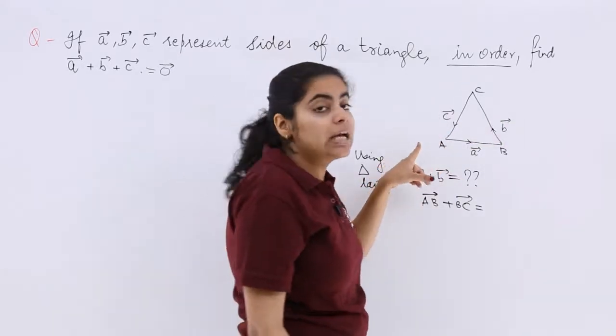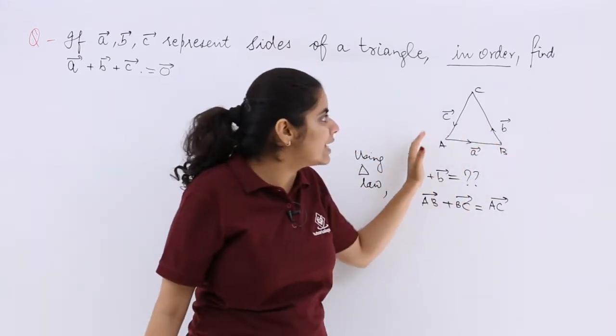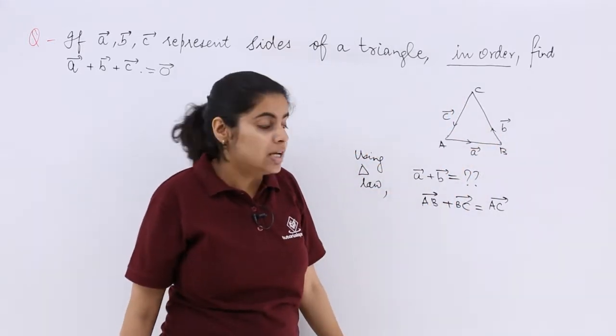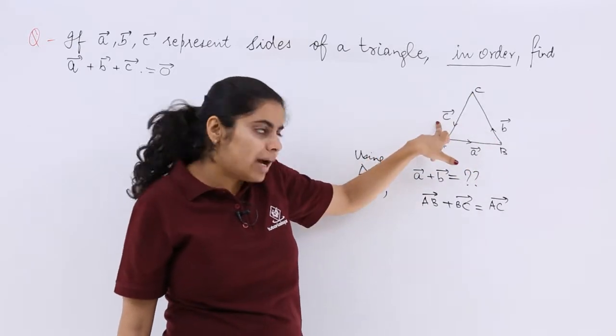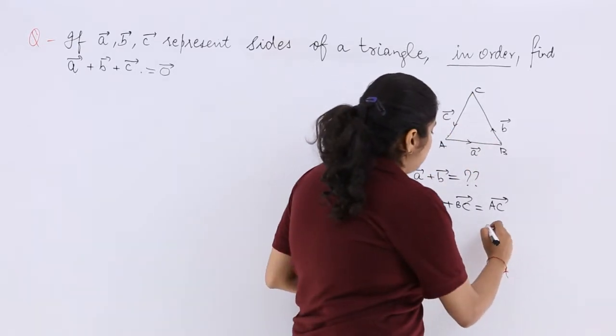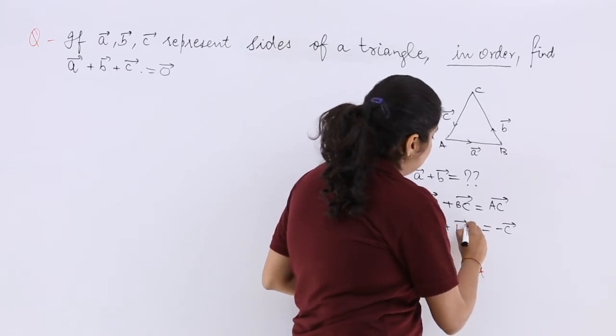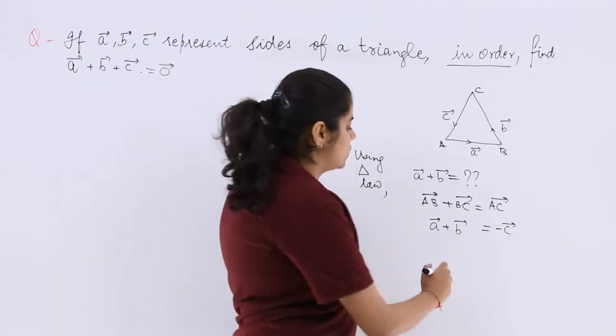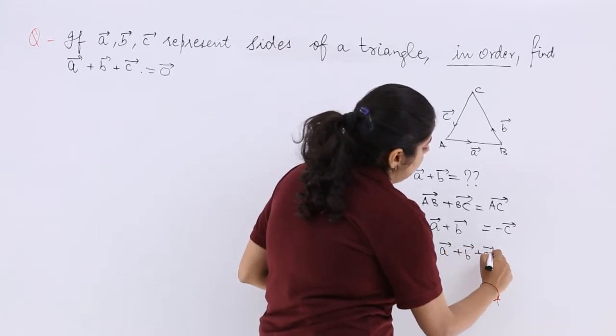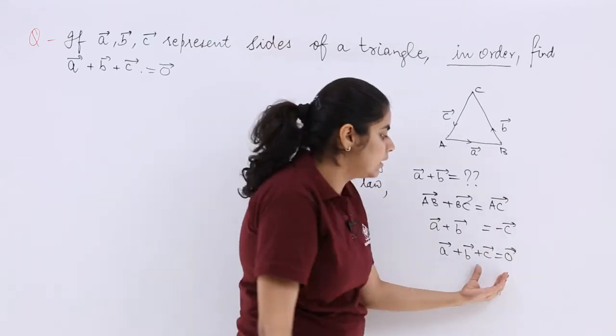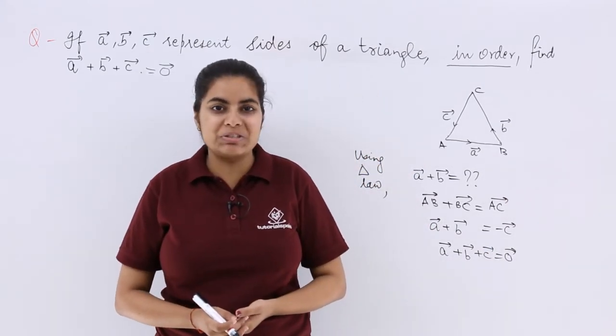This should be what? Now this should be AC vector because you know the resultant has the opposite order. But AC vector is what? AC is minus of C vector. So putting the values minus of C vector, this is A vector, this is B vector. So minus C comes to this side, becomes A vector plus B vector plus C vector is equal to 0 vector, which is the answer that null vector is the answer to this question.